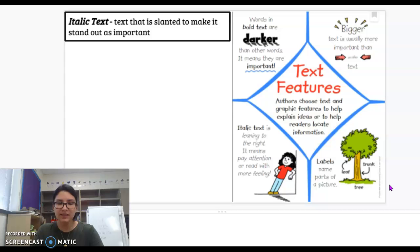So whenever you see text features, remember, they're there to help us, the reader, to better understand the information we are reading. So let's go ahead and go over these four different text features. Most of them will be a review and then there's going to be one that is new.